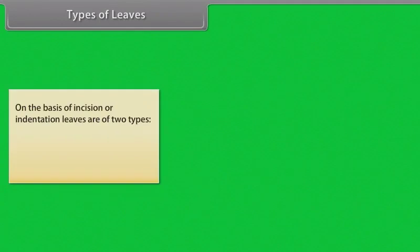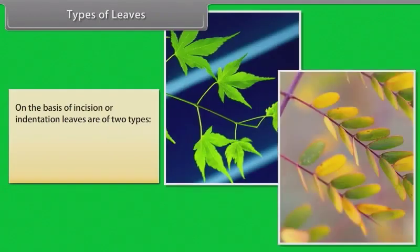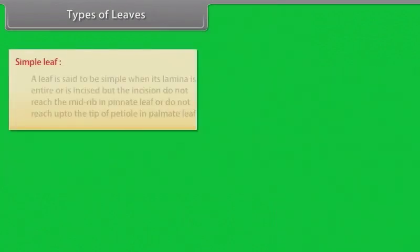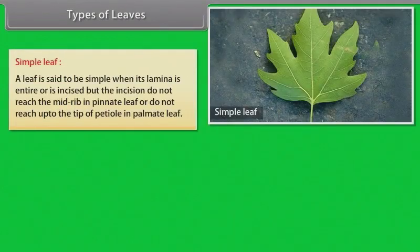Types of leaves. On the basis of incision or indentation, leaves are of two types: simple leaf and compound leaf. Simple leaf: a leaf is said to be simple when its lamina is entire or is incised, but the incision do not reach the mid-rib in pinnate leaf or do not reach up to the tip of petiole in palmate leaf.